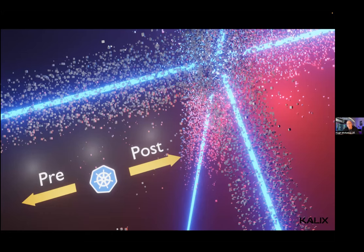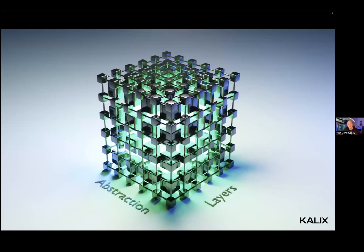There are three eras: pre-Kubernetes, Kubernetes, and post-Kubernetes. I'll be focusing on post-Kubernetes. Pre-Kubernetes, we were doing things that evolved at a certain pace for a long time. Then when Kubernetes came, it was just a fantastic thing for us to adopt, and many of us have adopted it. Now we're starting to build on top of that — that's where I think things are heading.